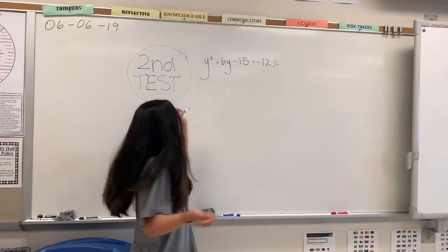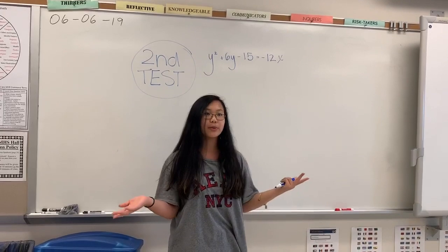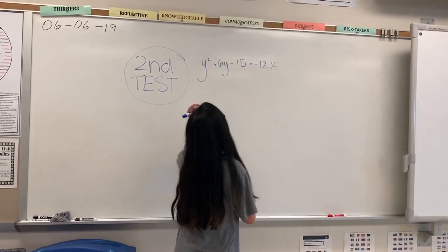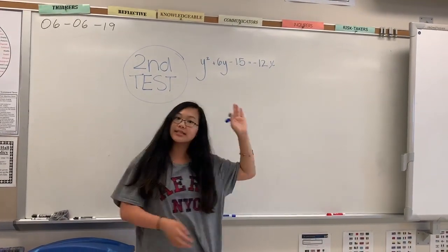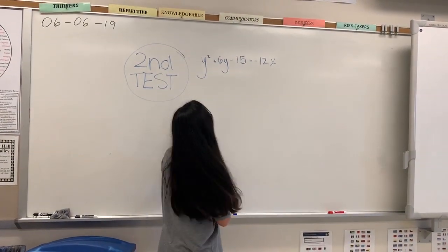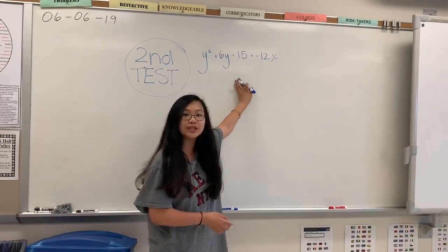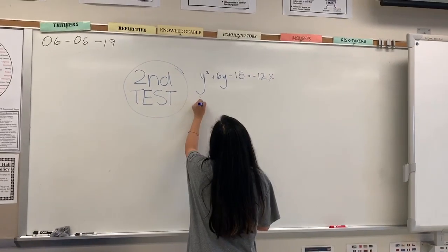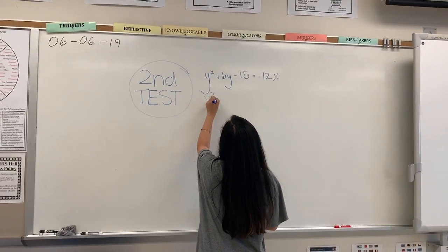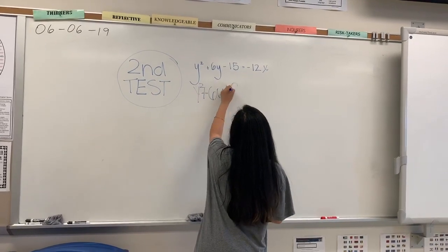So this is the second test. The conic here is a parabola. We know it's a parabola because one of the variables is squared — in this case, the y variable. The first thing to do is turn y squared plus 6y into a perfect square, which would be y squared plus 6y plus 9.